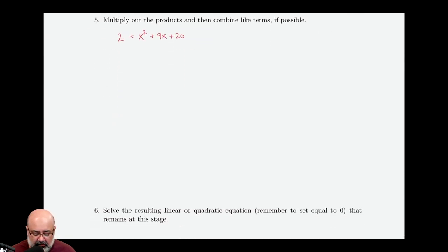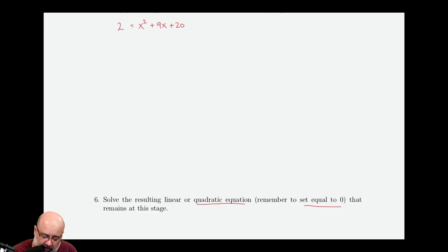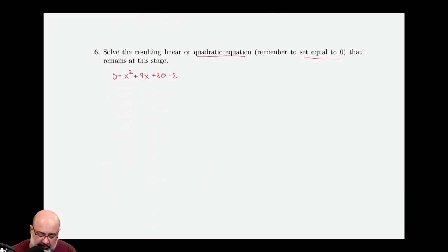So we have multiplied everything out. We've combined like terms. And at this stage, we have a quadratic equation. We know it's quadratic because the highest power is 2. How do we solve these? We set them equal to 0 first. Then we factor. And then we use the zero product property to set each factor equal to 0. So we start by moving the 2 to the other side. So I can set it equal to 0. So I get 0 equals x squared plus 9x plus 20 minus 2, which gives us x squared plus 9x plus 18.